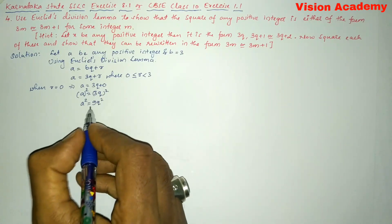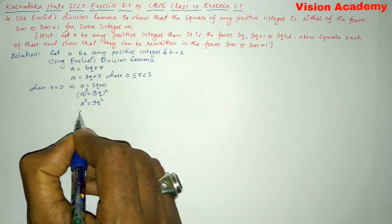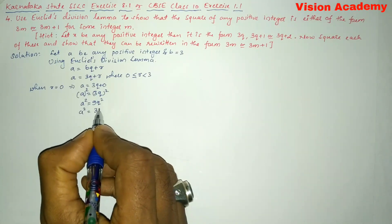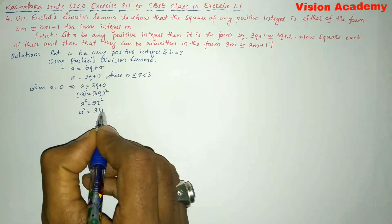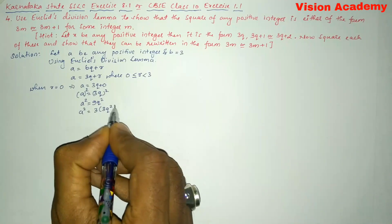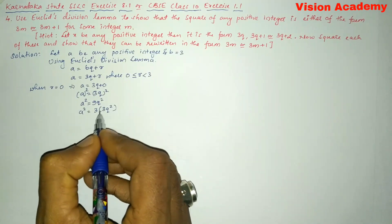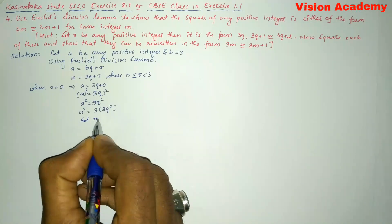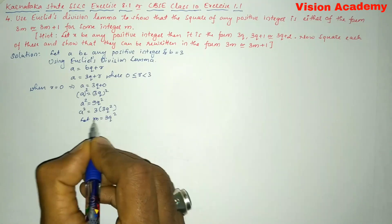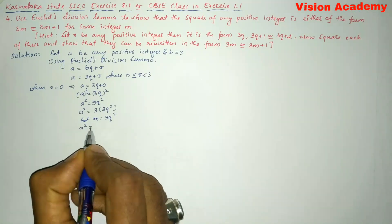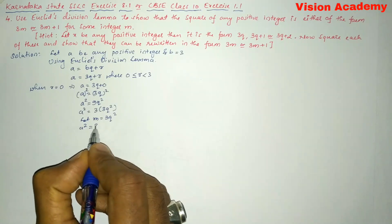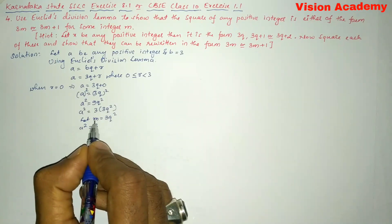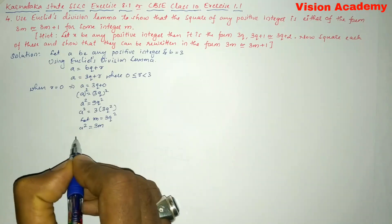Now let us take 3 as common. We can write A squared is equal to 3 into 3Q squared. Let M equal to 3Q squared. Then A squared is equal to 3M.